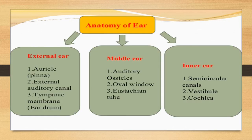The anatomy of the ear shows parts present in the external ear, middle ear, and inner ear. The external ear includes the auricle, the pinna, and the external auditory canal, ending at the tympanum membrane or eardrum. The middle ear includes the auditory ossicles, oval window, and Eustachian tubes. The inner ear includes the semicircular canals, vestibule, and cochlea.